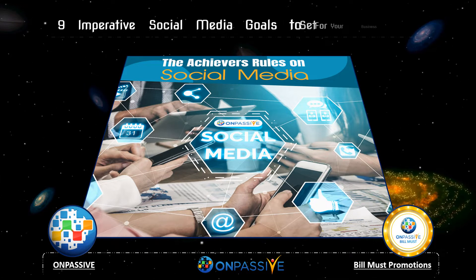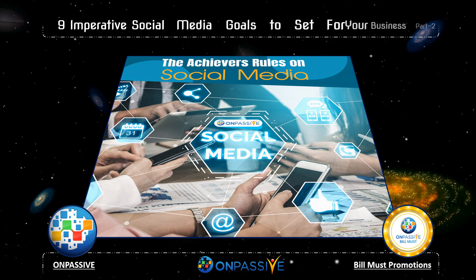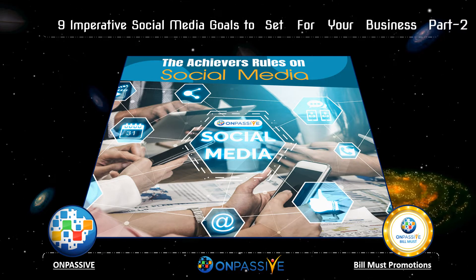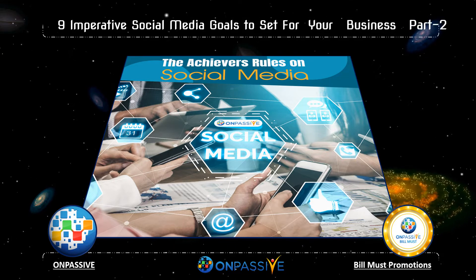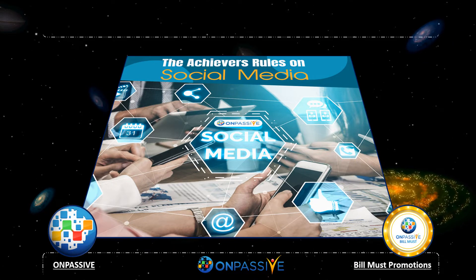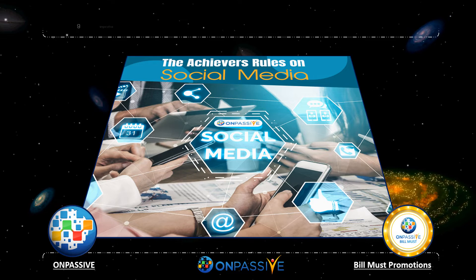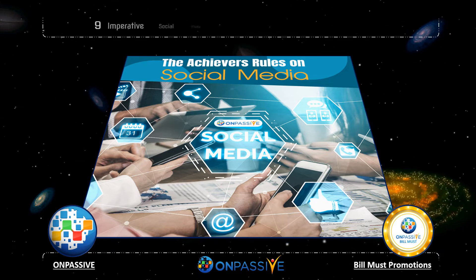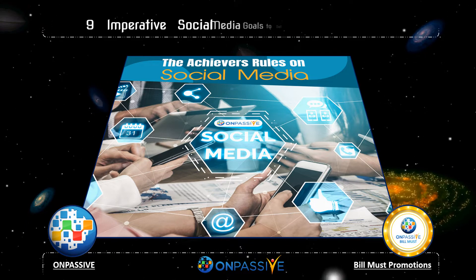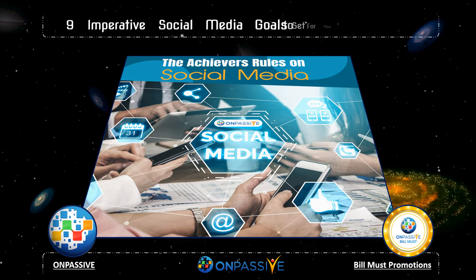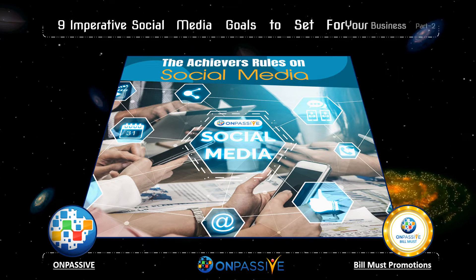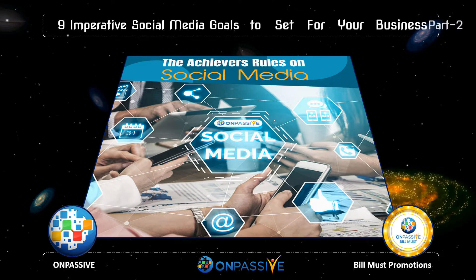Did you know that Facebook and Instagram prioritize posts with higher engagement? It is because users are more likely to see content with higher engagement above all else. Some of the metrics that we measure engagement with include likes, shares, comments, mentions, and replies. You can use social media platforms such as Facebook and Twitter to track engagement metrics quite easily and successfully.